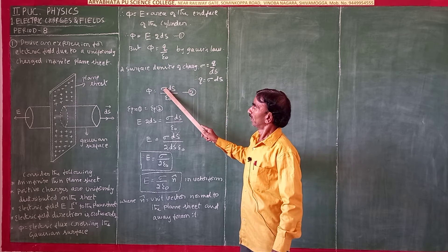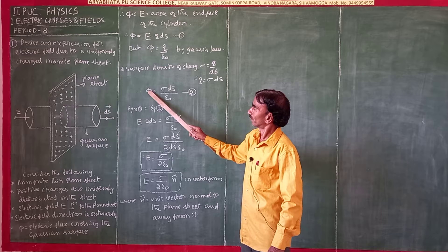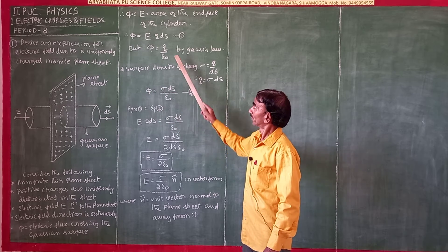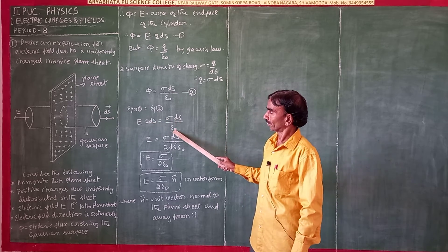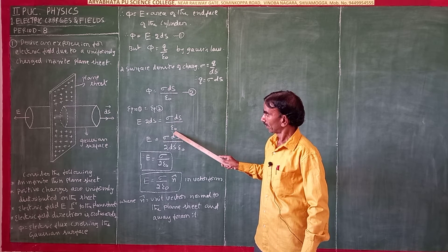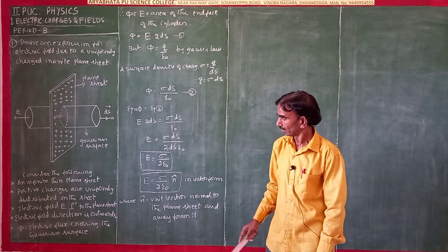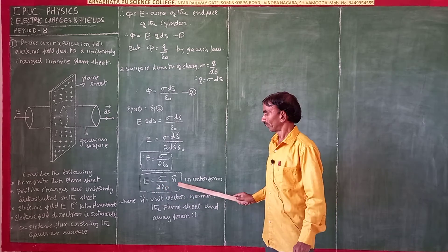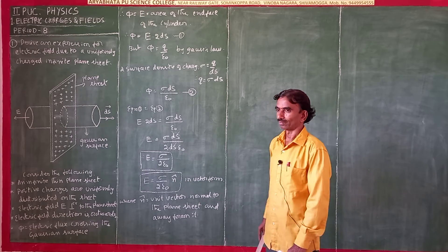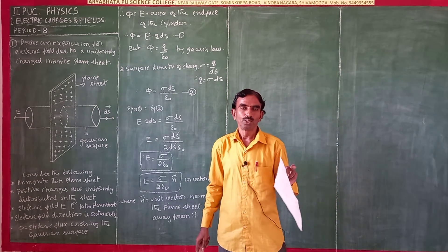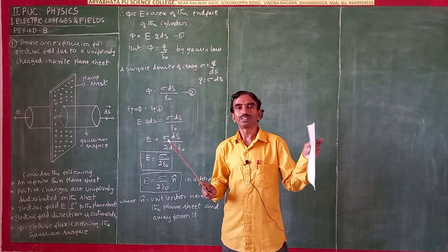Setting equation 1 equal to equation 2: E times 2dS equals sigma dS divided by epsilon naught. So E equals sigma dS divided by 2 dS times epsilon naught. The dS cancels, giving E equals sigma divided by 2 epsilon naught. In vector form, E equals sigma over 2 epsilon naught times n-hat, where n-hat is the unit vector.